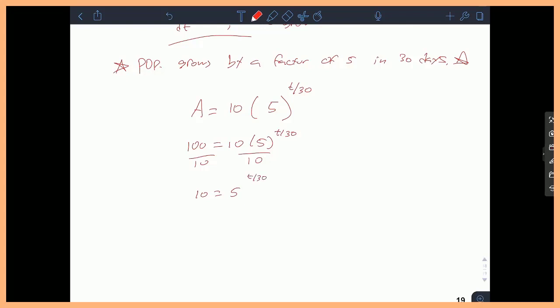And there's a number of ways to solve these problems. My favorite way is to take the natural log of both sides, because on the left you'll have natural log of 10, and on the right, when you take the natural log of this thing, because it has an exponent, the T over 30 actually just comes right down to the coefficient, which is nice. So you get ln 10 equals T over 30 ln 5.